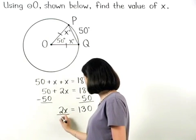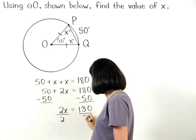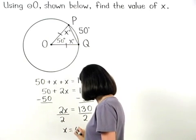Dividing both sides by 2, we find that x = 65.